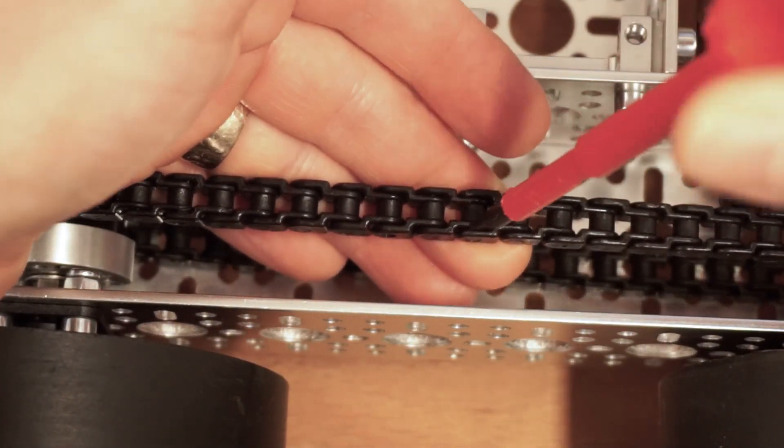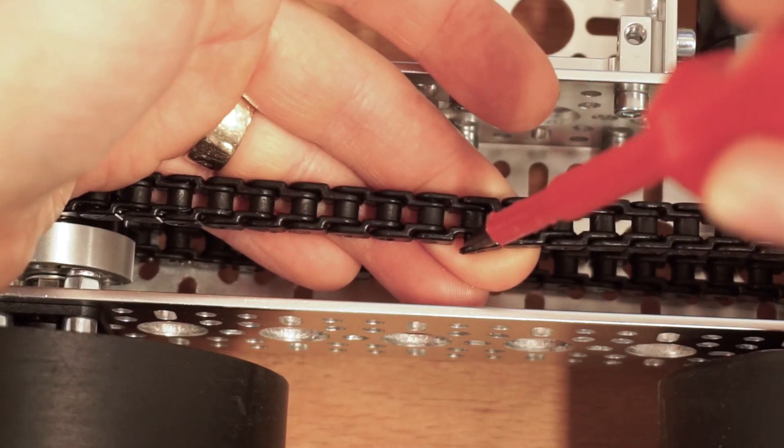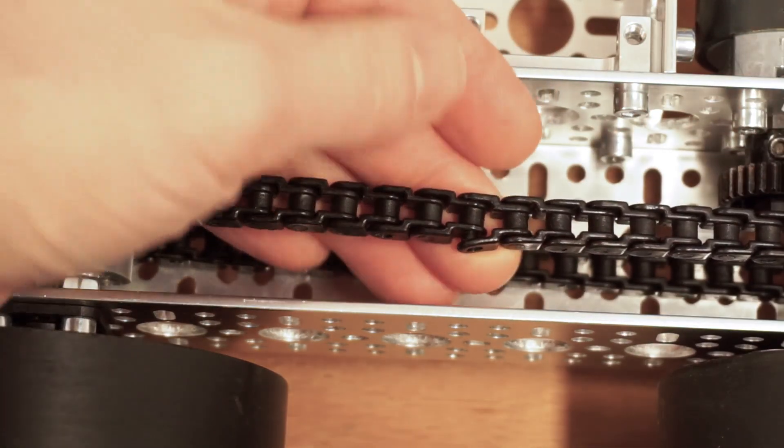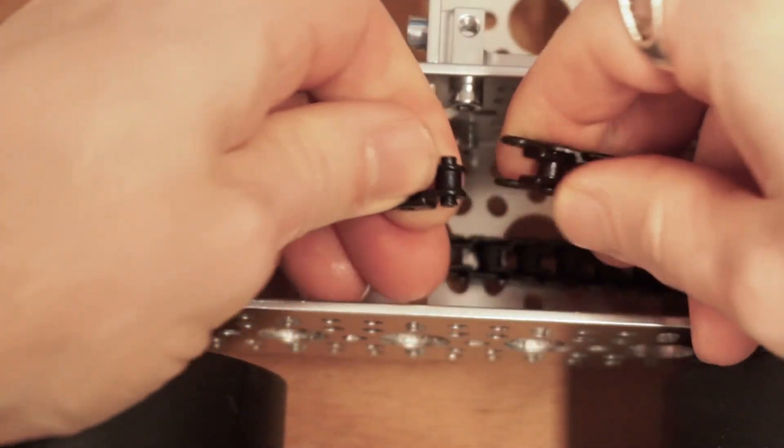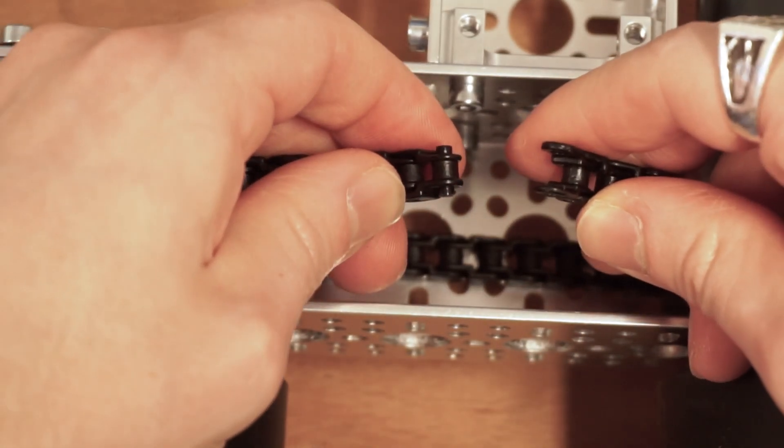So again, I'm going to take this slot screwdriver and push it in, give it a little twist. As I twist, it pops it out. And now I should be able to twist it out and get that point unclipped.